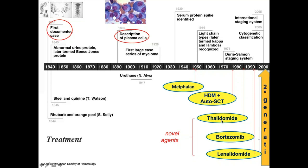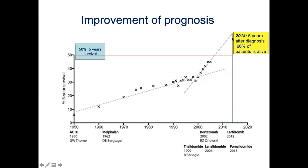The development of novel agents — thalidomide, bortezomib, lenalidomide — are not classical chemotherapeutics; they work directly on myeloma cells and shape the immune system unfavorably for myeloma. Combining them is especially effective. After these came second- and third-generation novel agents. With new medication, there has been a real advance in overall survival. The first documented myeloma case was in 1844; early treatments like rhubarb, orange peel, steel, and quinine did not work. Melphalan arrived in 1950 as the first effective therapy.